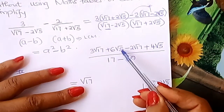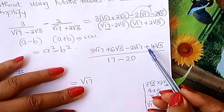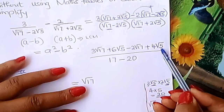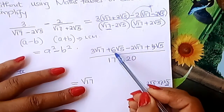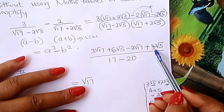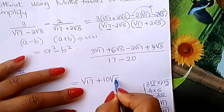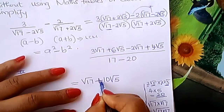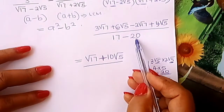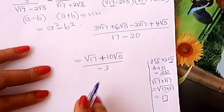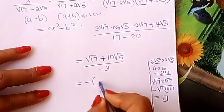Similarly, 6 root 5 plus 4 root 5 gives you 10 root 5. So you bring them together to get 10 root 5 in the numerator. Then divide by 17 minus 20, which is minus 3. So the denominator is negative 3.